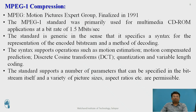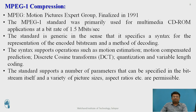The MPEG-1 compression standard stands for Motion Picture Expert Group, finalized in 1991. It was primarily used for multimedia CD-ROM applications at a bit rate of 1.5 Mbps. The standard is generic — it specifies a syntax for the representation of the encoded bitstream and the method of decoding. It supports operations such as motion estimation, motion compensated prediction, discrete cosine transform, quantization, and variable length coding. It also supports a number of parameters that can be specified in the bitstream itself, and varieties of picture sizes, aspect ratios, etc. are permissible.